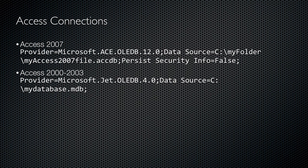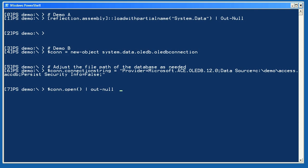Here's an example connection string for an Access 2007 database, or Access 2000, 2002, or 2003. Note that you actually have to have Access installed on the same computer as PowerShell for these to work. You modify the data source portion of the string to indicate the location of your Access database file. To open the connection to the database, execute the Open method — this returns some output, so I'm piping it to Out-Null to suppress that output.